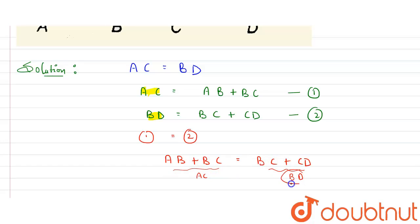This whole is value of BD, this whole is value of AC. That's why we have written it. Let's erase this. Now you can see here this BC line and this BC gets cancelled.